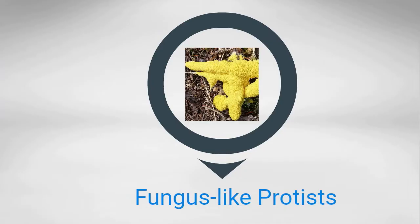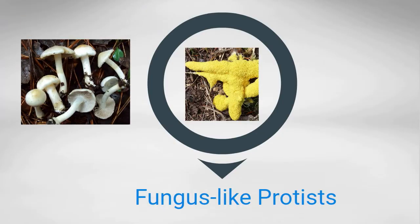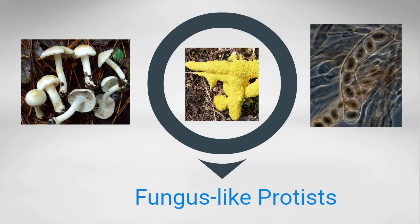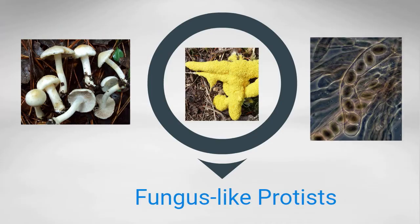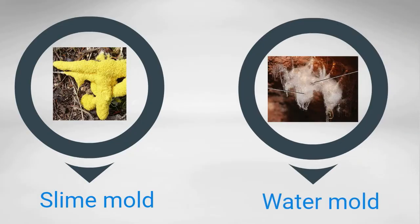Fungus-like protists have many of the same characteristics as fungi. They are heterotrophs and feed on decaying organisms. In addition, many of these protists reproduce using spores. Two examples I would like to talk about are slime molds and water molds.